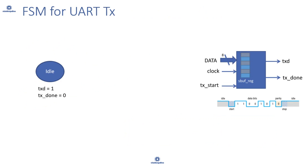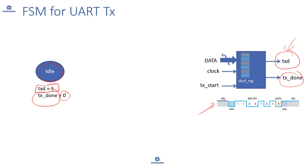Initially, we don't have any data so we are in the idle state. In the idle state we drive txd=1, which means the line is idle, and our transmission is not done so we drive tx_done=0. txd=1 is the idle value, nothing is happening on the line.